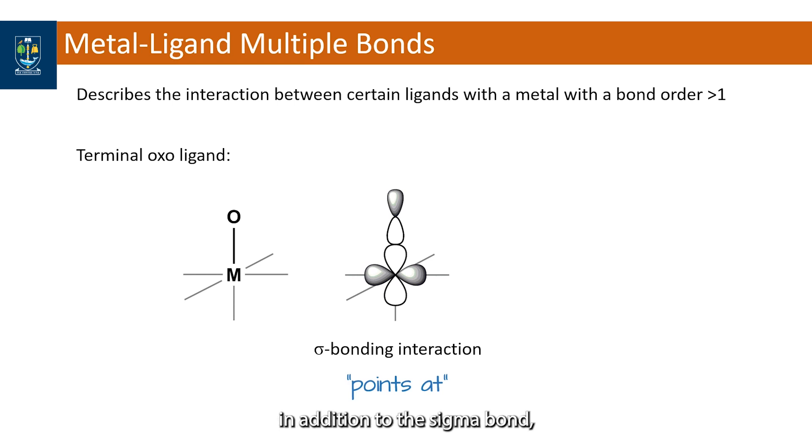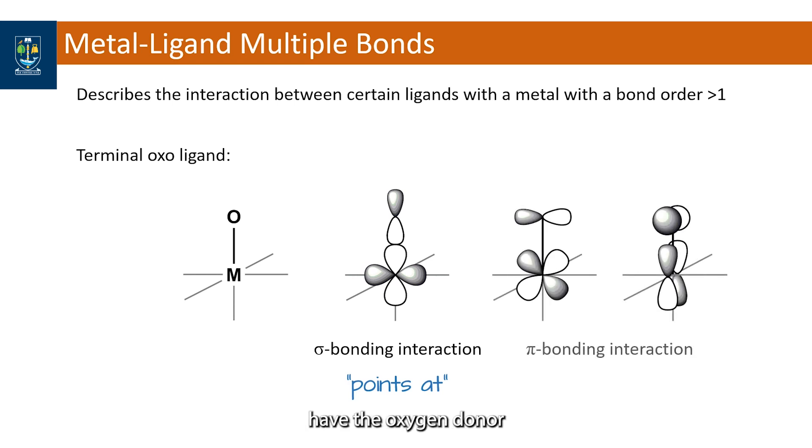In addition to the sigma bond, which all ligands have, the oxygen donor atom has additional lone pairs that can form bonds with the metal. These lone pairs are in the px and py orbitals, which are orthogonal to the metal oxide bond and have a side-on orientation to generate a pi interaction with the metal d orbital of matching symmetry.